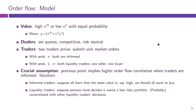Let us as usual take this stance that we have one asset with fundamental value V, which can be either high or low with equal probability. So the mean value, the market valuation of the asset, who does not know the true value, is given by VH plus VL over 2.